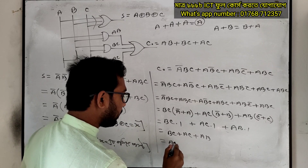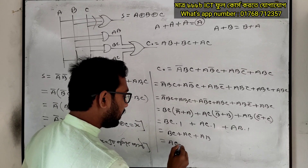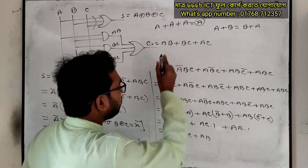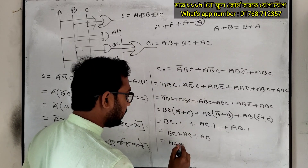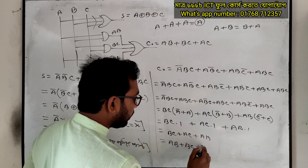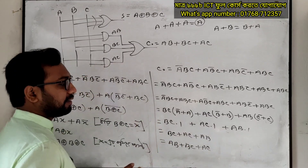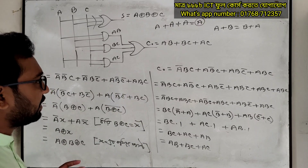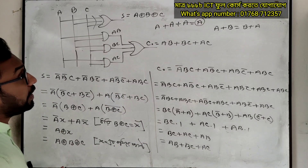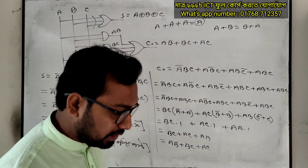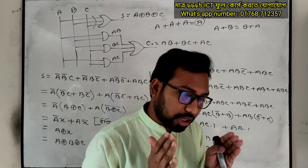The answer is AC plus AB, BC, then AC, just AB — which means AB.